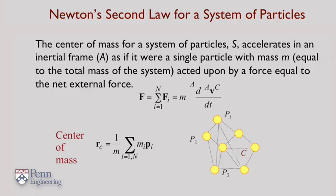Here the notation requires a little bit of explanation. The superscript a refers to the fact that you're computing all these quantities in an inertial frame a. The superscript c refers to the fact that you're computing the velocity of the center of mass.